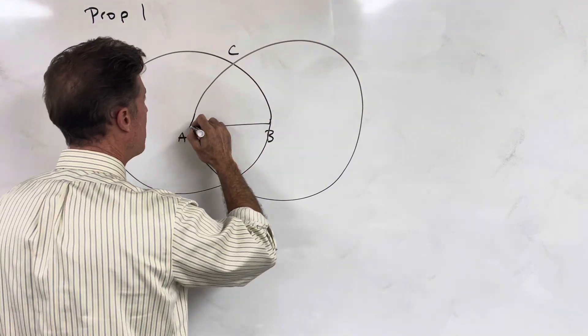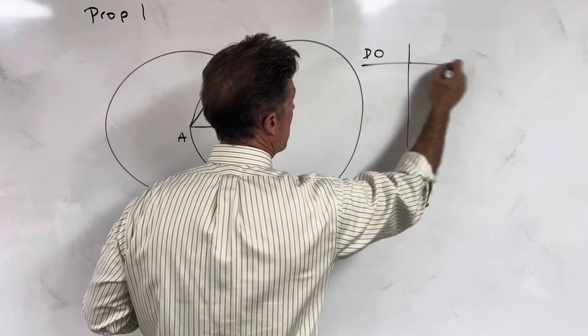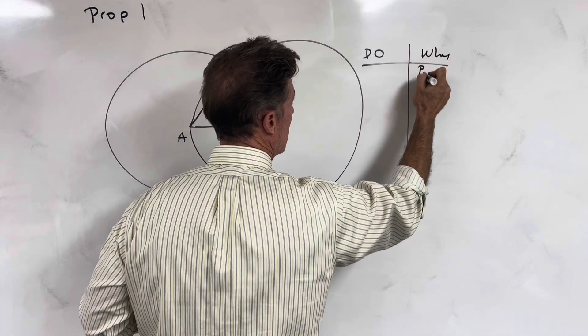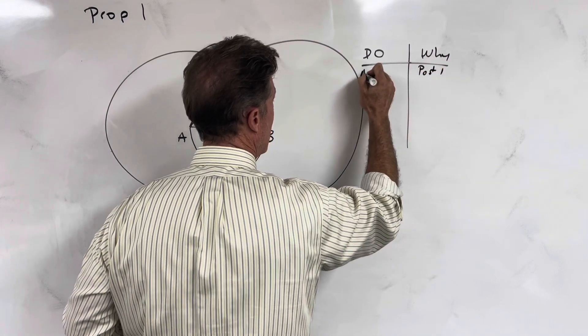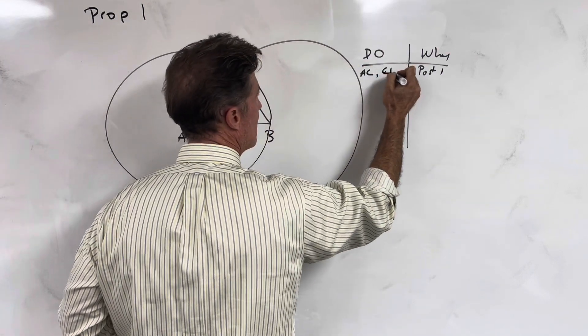We'll connect points AC and CB. And we know we can do that because of postulate 1, which says we can connect any two points with a straight line.